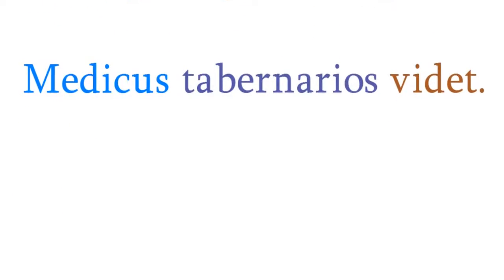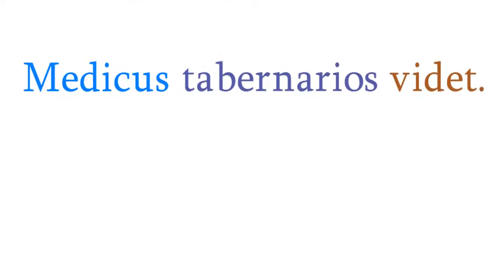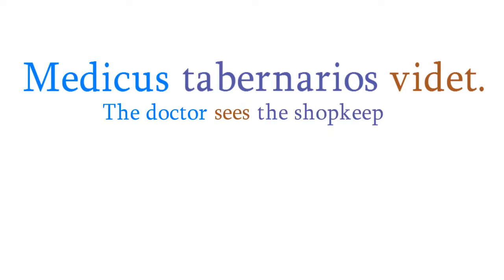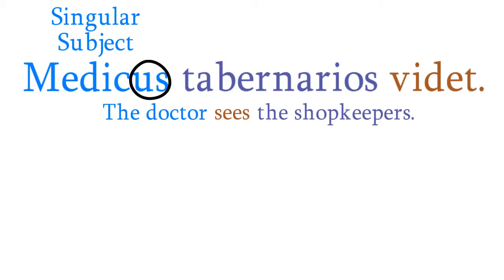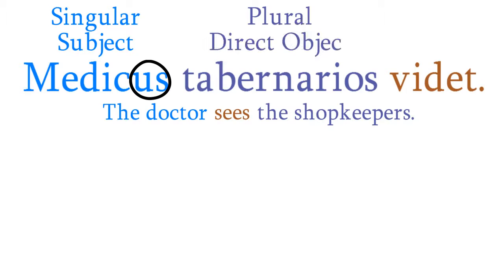Now consider this sentence: medicus tabernarios video — the doctor sees the shopkeepers. Medicus is the subject because it has the singular subject ending us, but tabernarios is the direct object because it has the plural direct object ending os.